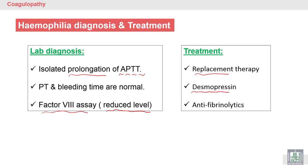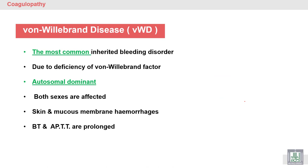Another drug is desmopressin, which increases Factor 8 levels. We also use anti-fibrinolytic drugs to treat the side effects of desmopressin, which stimulates the fibrinolytic system. We give the patient anti-fibrinolytics to avoid this complication. Von Willebrand disease is the most common inherited bleeding disorder.